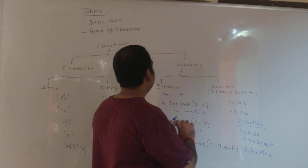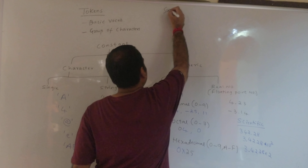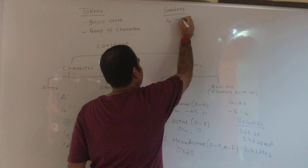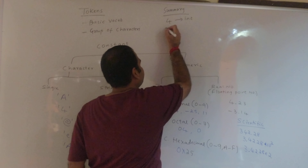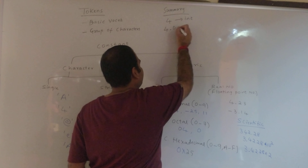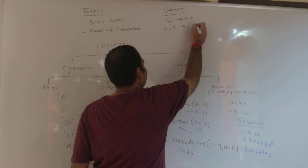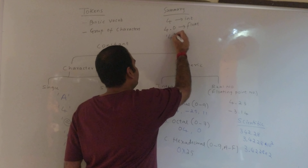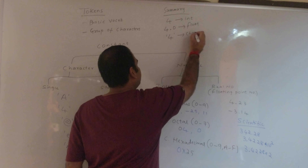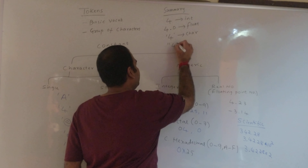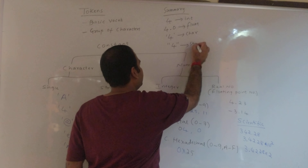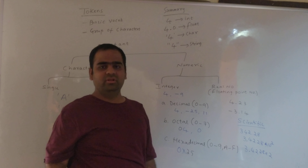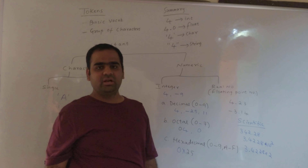To summarize: if we write 4, it is an integer. If we write 4.0, it becomes a floating point number or real number. If we write '4' in single quotes, it is a character constant. And '4' written in double quotes becomes a string constant. Thank you for watching — in the next tutorial we will start with operators.